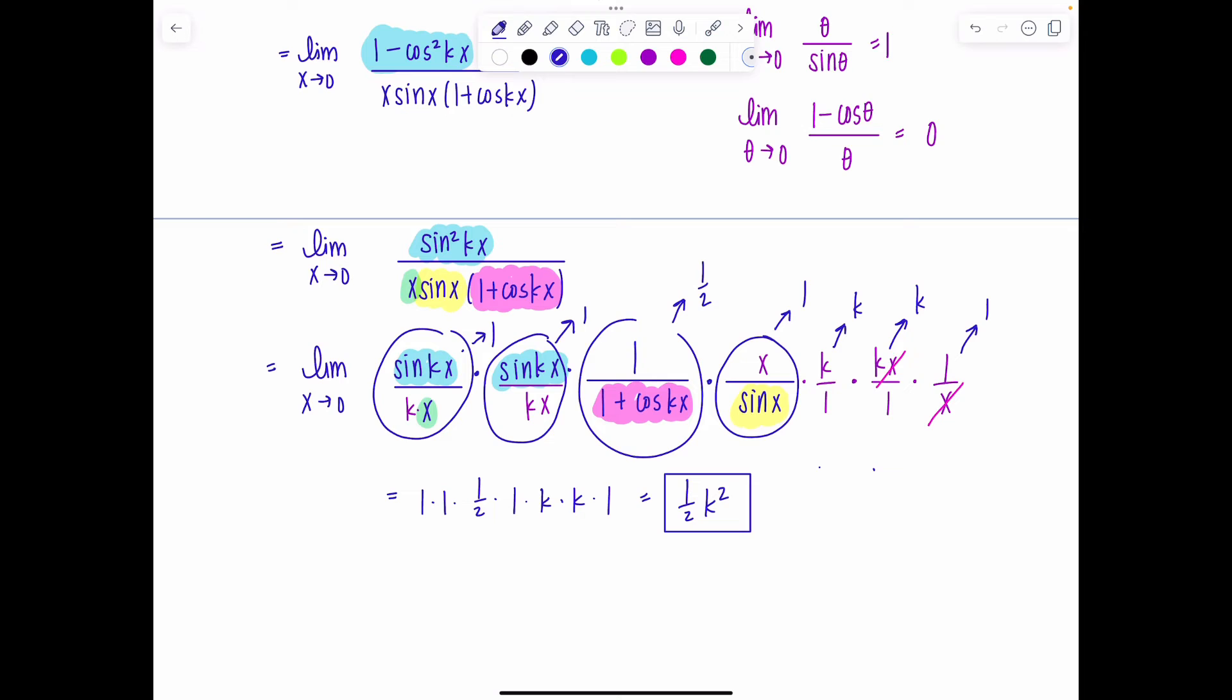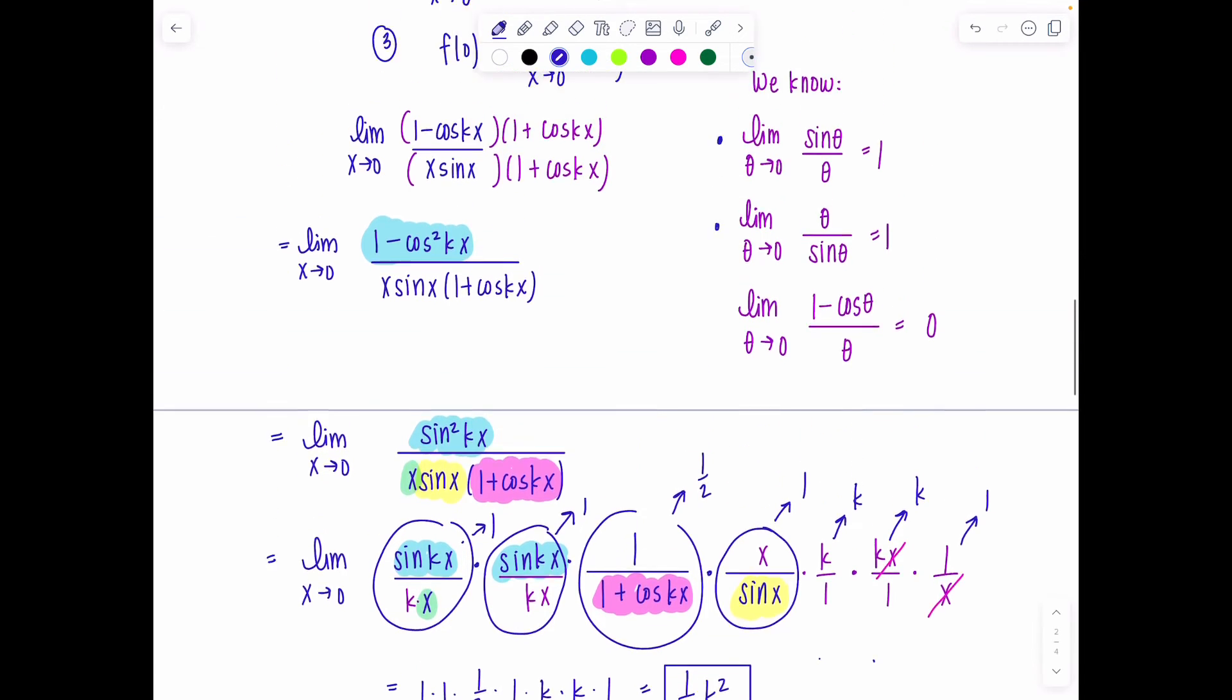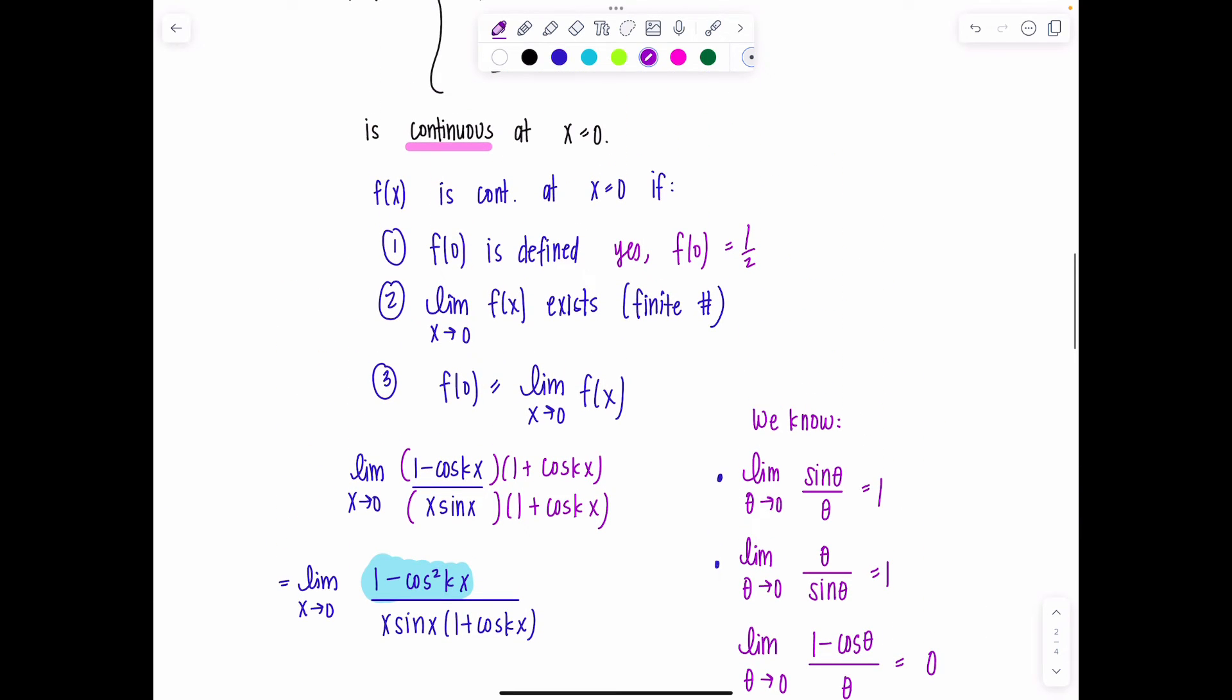So now I can go back to step two in my continuity definition. And I can say we did indeed find the limit. It was finite as x approaches zero of f(x), and it is (1/2)k². Well, step three, I need to ensure that the limit equals the function value.